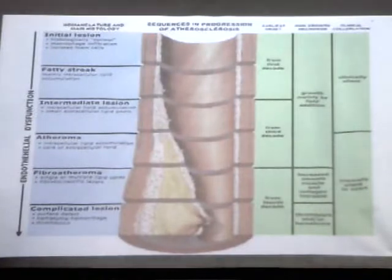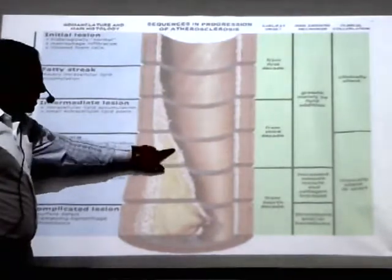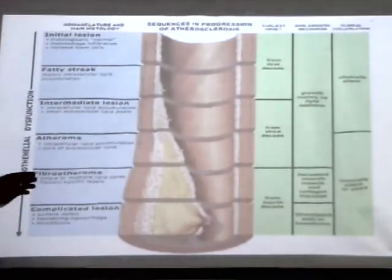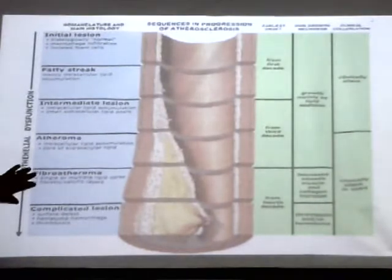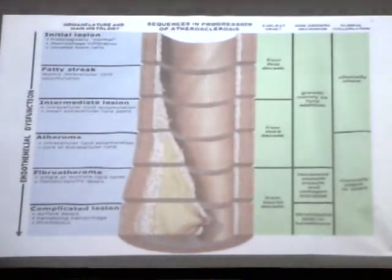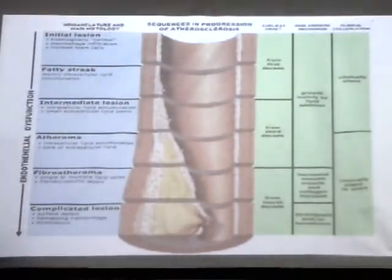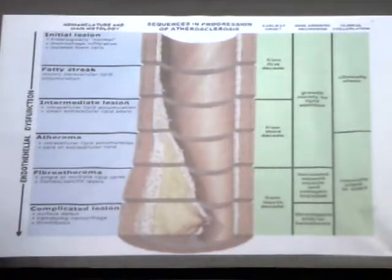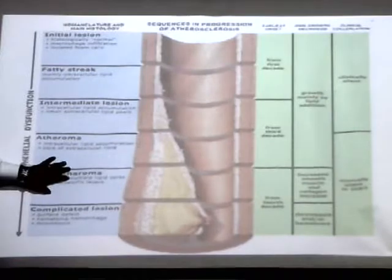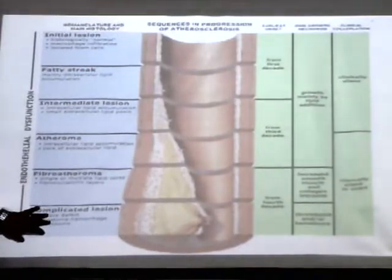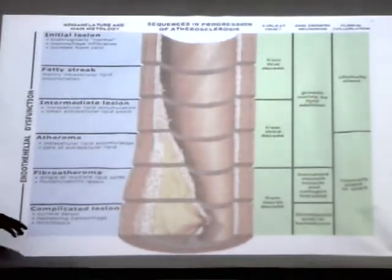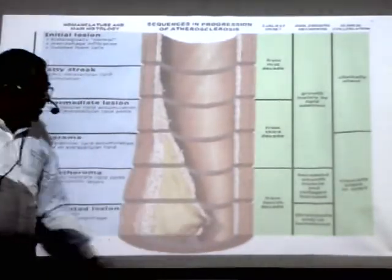Then comes a later stage where the development of atheroma starts — extracellular lipid accumulation increases, seen as yellow-colored structures. Later, in the fourth decade, a single or multiple lipid core develops. This lipid core is present here, and you can see fibrous deposition or calcification can also be seen.